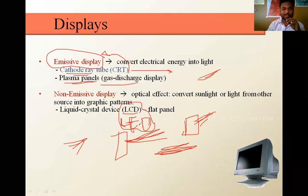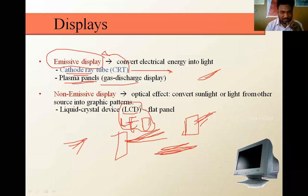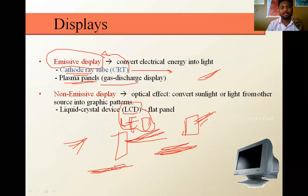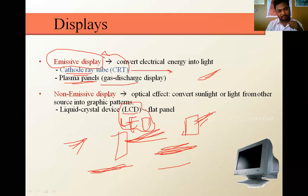We are now using LCD and LED monitors and are not using the CRT monitor right now. But as a syllabus topic, we need to know the function of the CRT monitor. Two things have to be known: the emissive display — where we generate high intensity beam rays — and the non-emissive display, where we do not produce or generate any type of beam or rays.